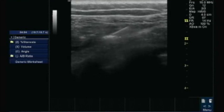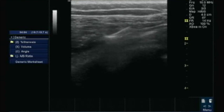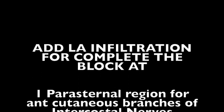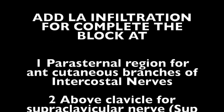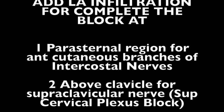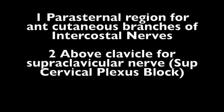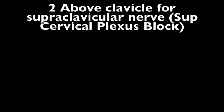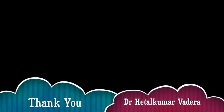You can add some local infiltration in certain areas, like the parasternal area for anterior cutaneous branches of the intercostal nerves, and above the clavicle for the supraclavicular nerve — that is a branch of the superficial cervical plexus. This will complete your block for comprehensive analgesia. Thank you.